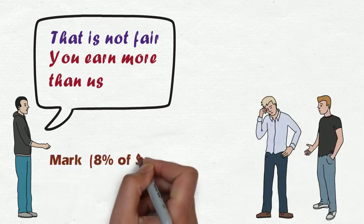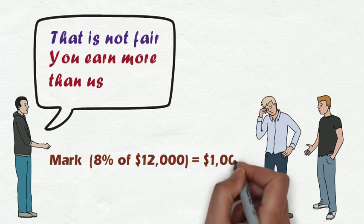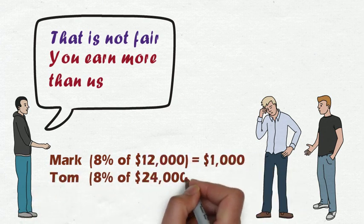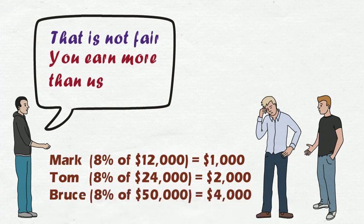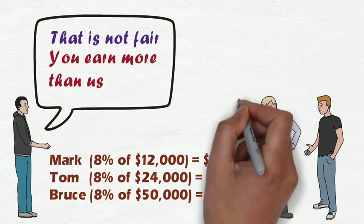This will mean that Mark will have to pay 8% of $12,000, which is approximately $1,000. Tom will pay 8% of $24,000, which is approximately $2,000. And Bruce will pay $4,000, which is 8% from $50,000.